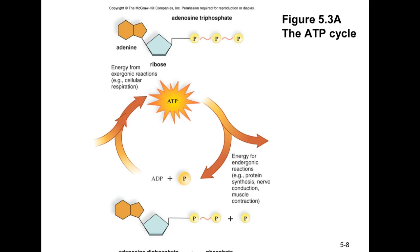The energy currency of the cell is stored in the terminal bond between the second and third phosphate groups. You get approximately negative 7.3 to 7.4 kilocalories per mole of energy every time that bond is broken.